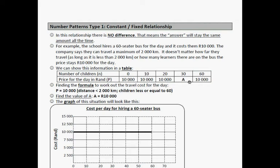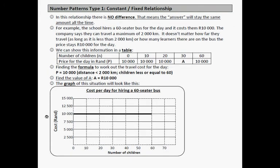This is the information in the table. If no children go, they will have to pay R10,000. If 10 children go, R10,000. If 20 children go, R10,000. A fixed amount. And then 60 children, R10,000 rand. So, finding a formula to work out the cost for the day will be P = 10,000, and then you will have to add the distance smaller than 2,000 kilometers, the children less than or equal to 60. So, this is part of the equation because you can't just put 100 children on the bus. By law, you're only allowed to put 60 children on the bus. Plus, they can't travel more than 2,000 kilometers. Find the value of A. A is R10,000 rand. So, the graph will look like this. The cost is R10,000 rand, regardless of the amount of children. This is a constant or a fixed relationship.